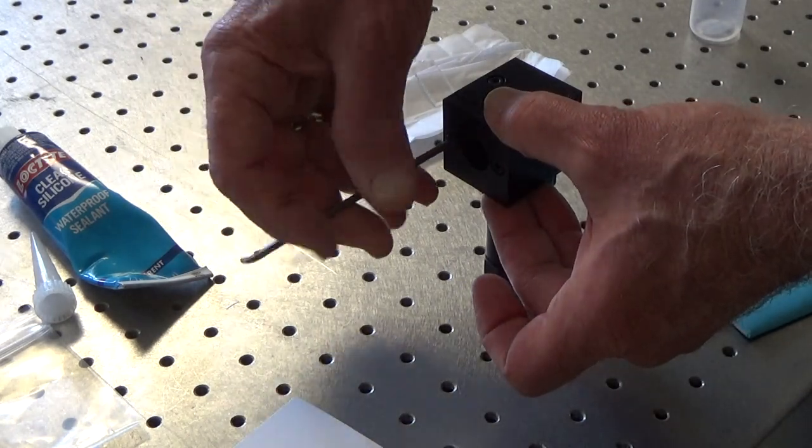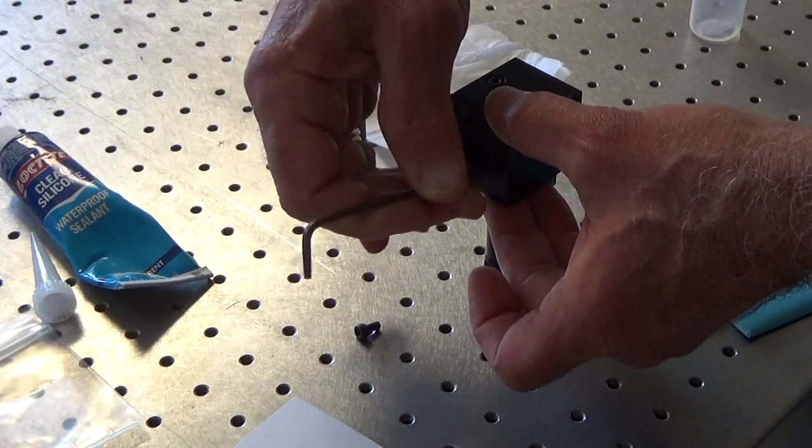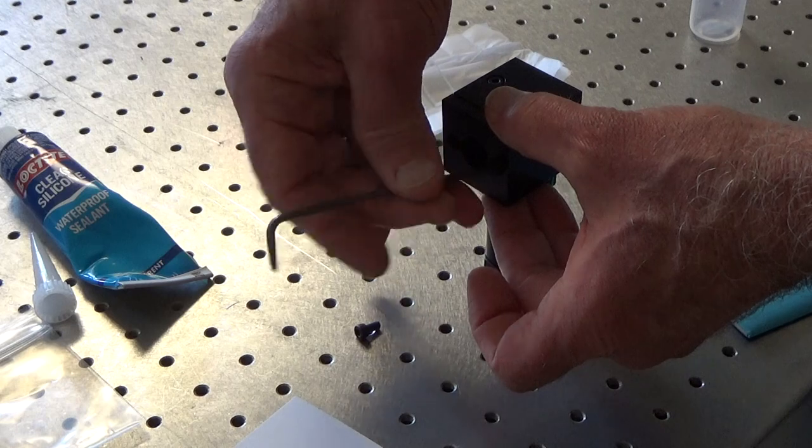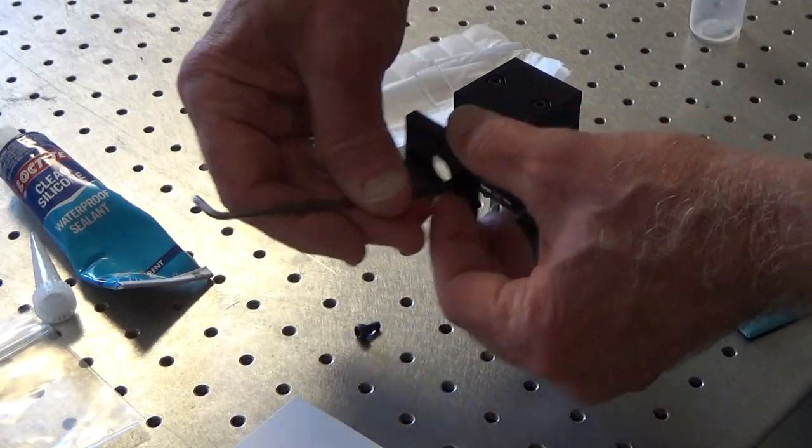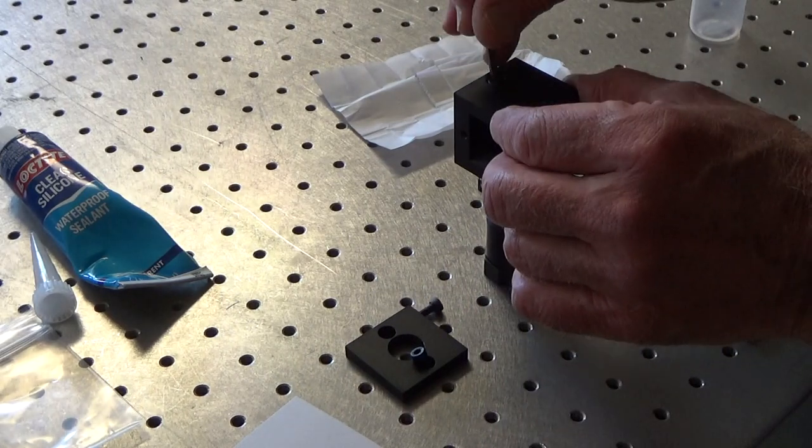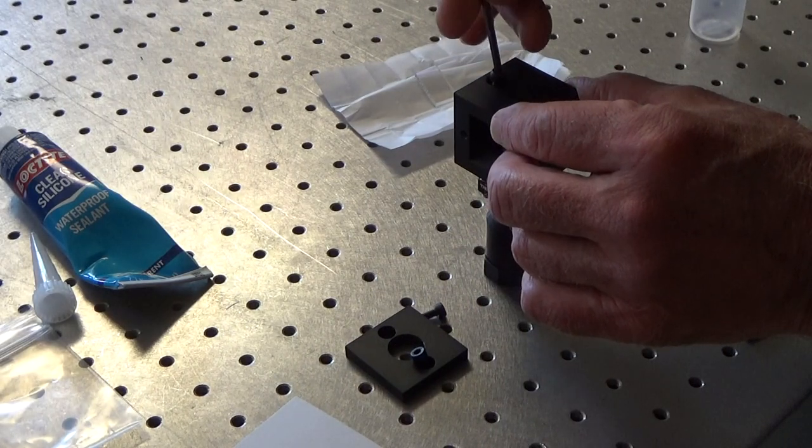First, you'll take off the entrance cover to the thin film polarizer housing, and the top cover that holds a beam dump for the rejected polarization.